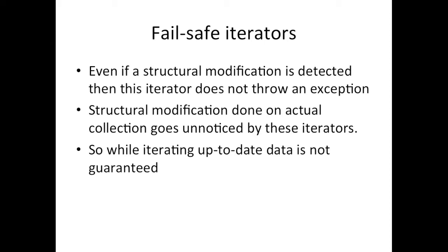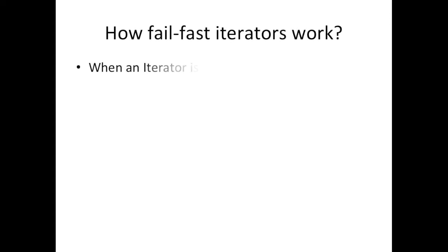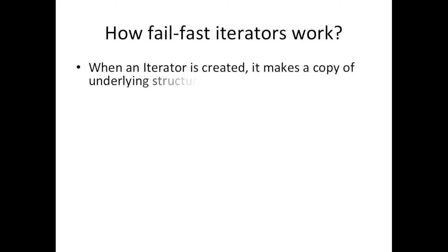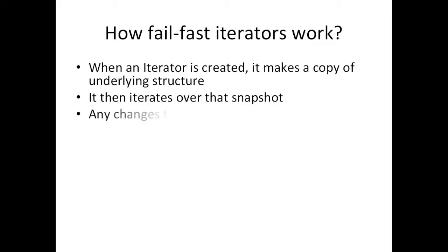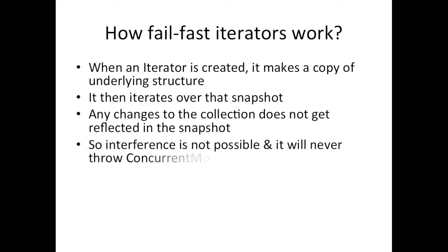While iterating, up-to-date data is not guaranteed. Examples of these iterators include iterators on ConcurrentHashMap and CopyOnWriteArrayList. When an iterator is created, it makes a copy of the underlying structure of the collection and then iterates over that snapshot. Any changes to the collection do not get reflected in the snapshot, because whatever changes are made go to the original collection, not the snapshot.